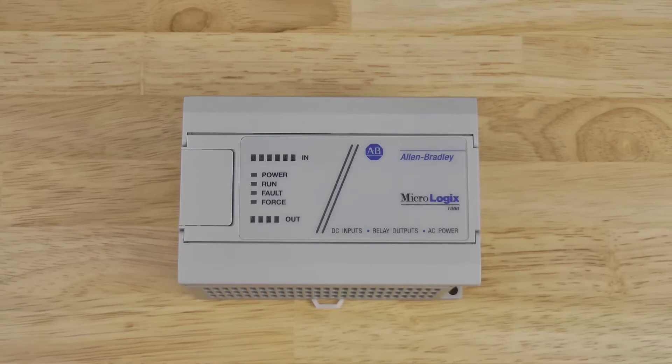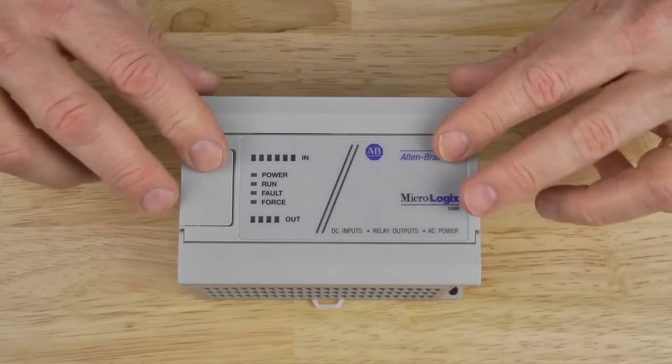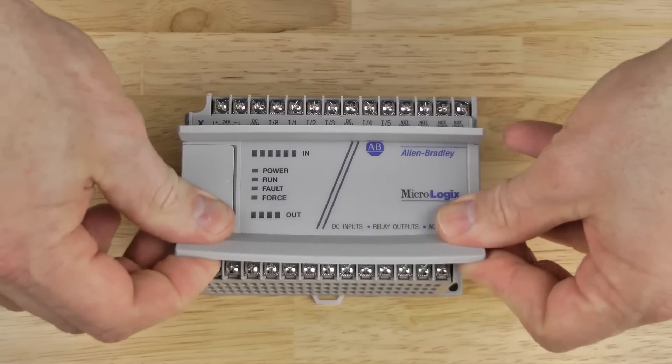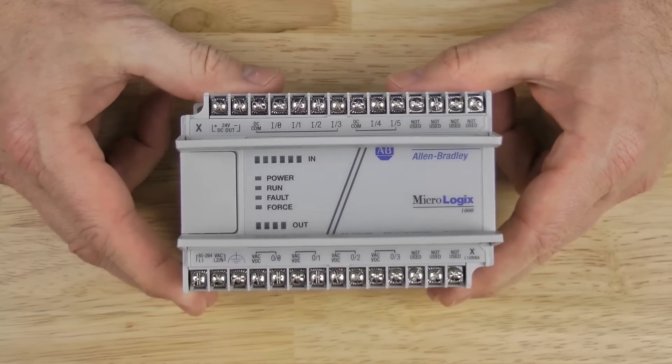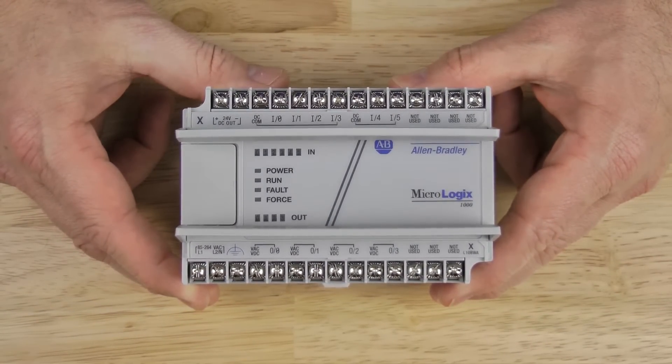Okay, let's start by opening up the top and bottom terminal covers. They are hinged and they just snap open. Once you get them open, you can see each terminal is labeled. We'll start at the bottom.